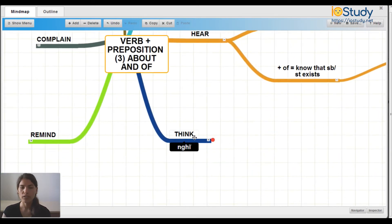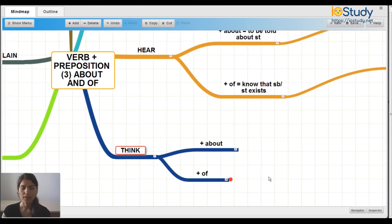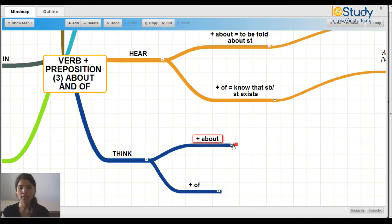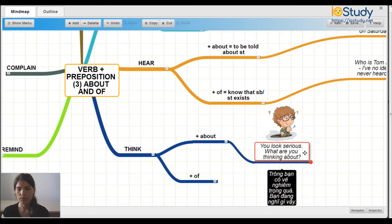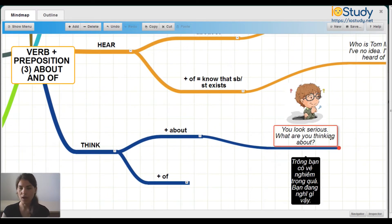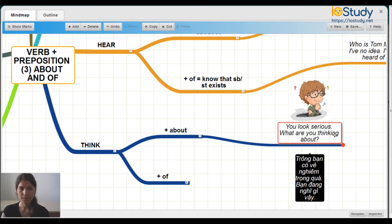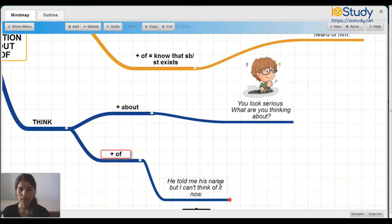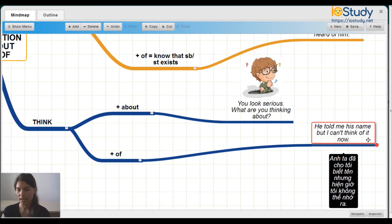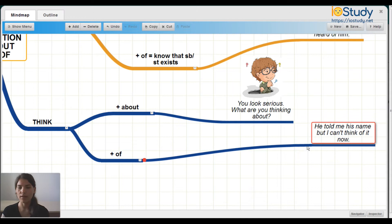The next verb we're going to talk about is think. You can think about or of. To think about, for example, you look serious, what are you thinking about? And thinking of, for example, he told me his name but I can't think of it now. These are both using think. We can say think about or think of.